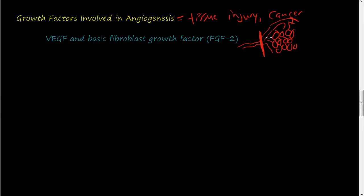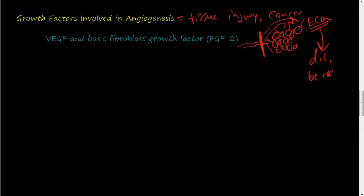As this angiogenesis pathway happens, what is right here? This is either cells or the extracellular matrix. In the extracellular matrix videos, we talked about how the extracellular matrix helps with cell motility, proliferation, and differentiation. In order for this blood vessel to be formed and grow into this area, this extracellular matrix needs to be removed. So we're going to talk about the growth factors and the process of this.